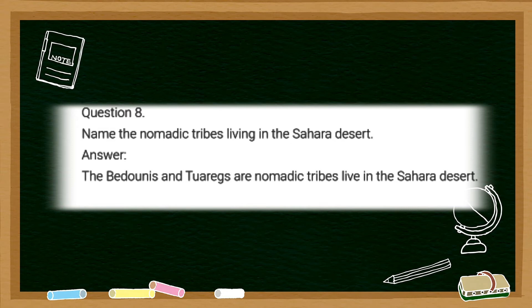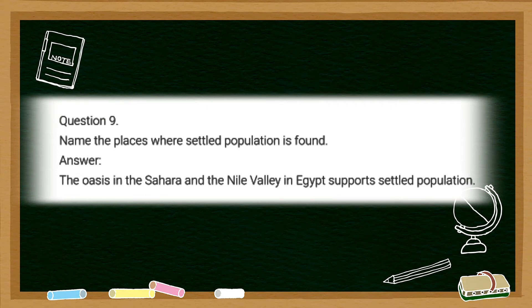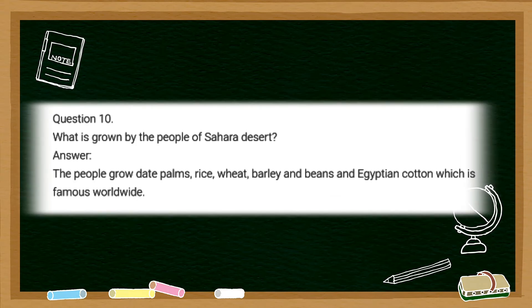The answer is the Bedouins and Tuaregs are nomadic tribes living in Sahara desert. The ninth question is: name the places where settled population is found. The answer is the oases in Sahara desert and the Nile valley in Egypt support settled population. The tenth question is: what is grown by the people of Sahara desert?